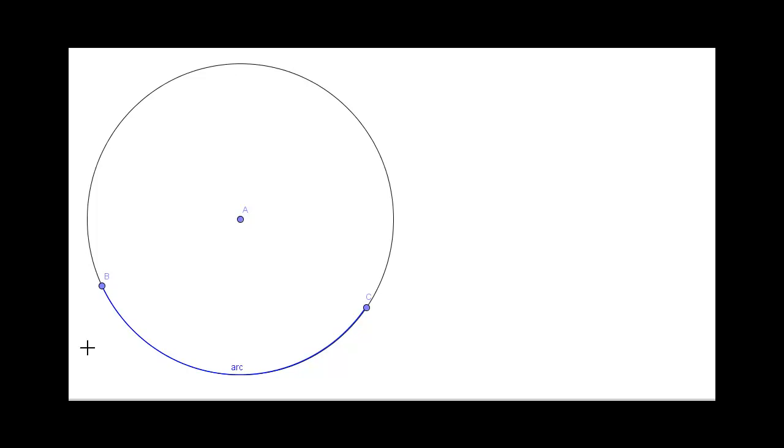As you can see, here we have a circle and this blue bit here is called an arc, which is just a portion of the circle circumference. We have the points B and C and A, which is the middle of the circle.